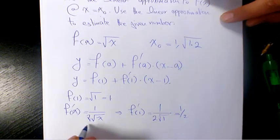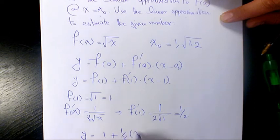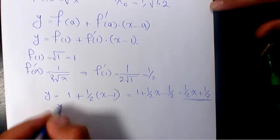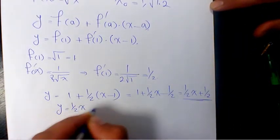When you substitute there, y will be equal to one plus one over two times x minus one. So you have one plus one over two x minus one over two, that's going to be one over two x plus one over two. So y equals one over two x plus one over two.